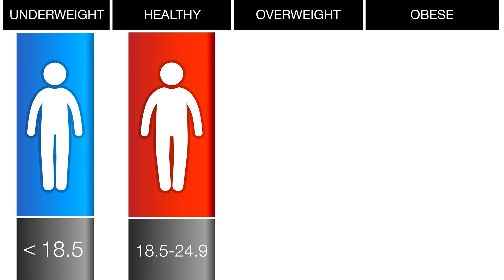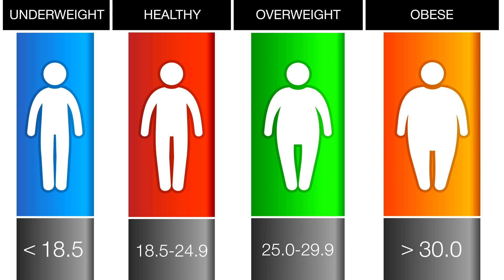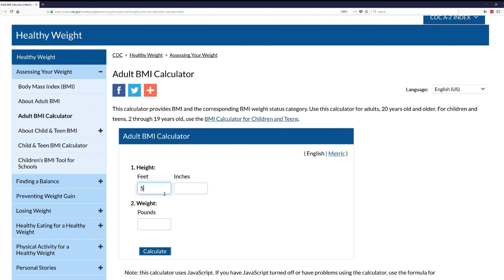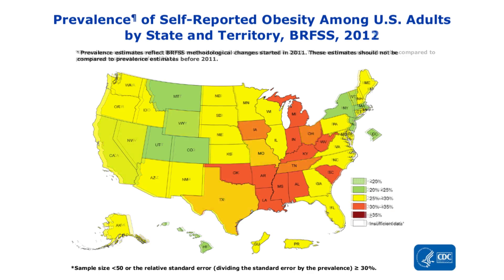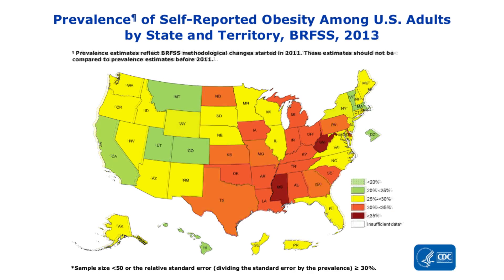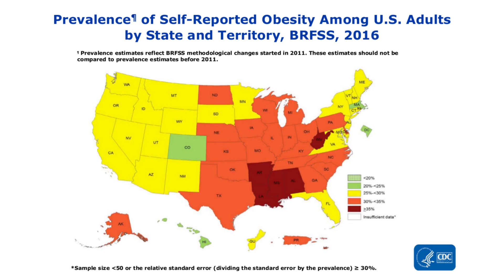Overweight is 25 to 29.9, and obese is greater than 30. You can use an online calculator to determine your BMI and avoid those pesky unit conversions. As you can see, BMI is really quick and easy to calculate, so it's been used to monitor obesity trends in populations and to screen patients in doctors' offices.